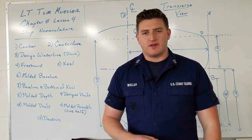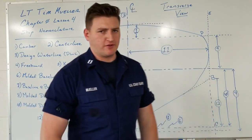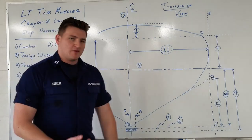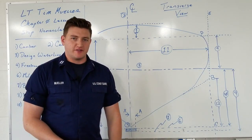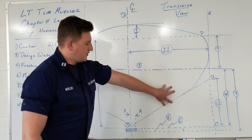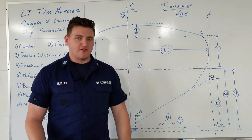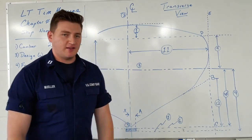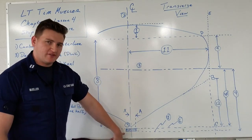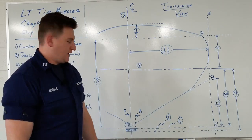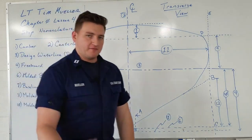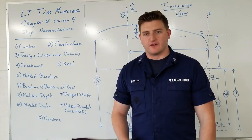Number five on the list is the keel, which is arguably the most critical structural component of a ship. Everything from the girders to struts to the skin of the ship is either directly or indirectly connected to the keel. The keel forms the basis of the draft — the deepest part of the ship — as well as the overall curvature from stem to stern.